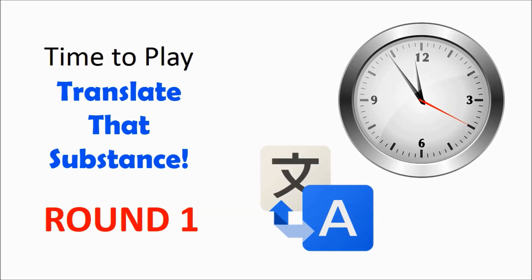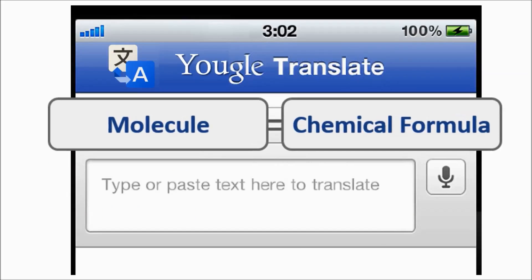Get ready. It's time to play Translate That Substance. In this round, you'll see a picture of a molecule. Count the atoms of each element, and translate what you see into a chemical formula. At this point, we're not worried about which element to write first in the formula. We just want to make sure you have the correct subscripts following each chemical symbol.